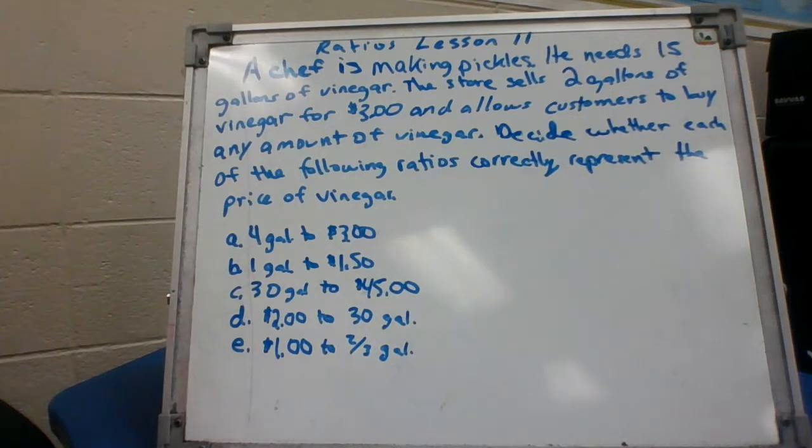A chef is making pickles, he needs 15 gallons of vinegar. The store sells two gallons of vinegar for $3 and allows customers to buy any amount of vinegar. Decide whether each of the following ratios correctly represent the price of vinegar.